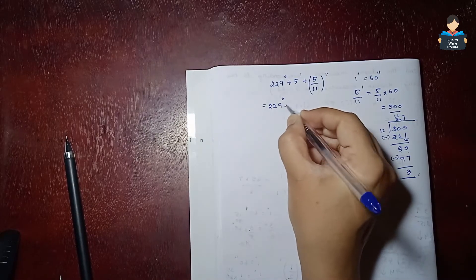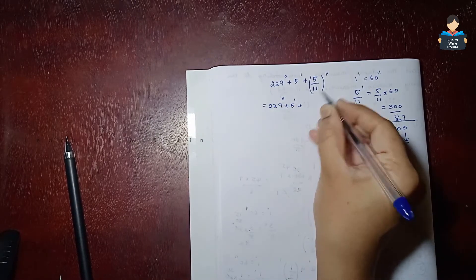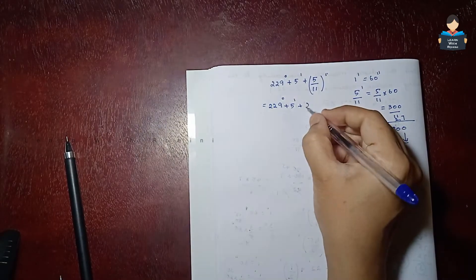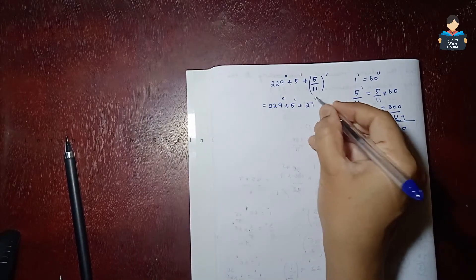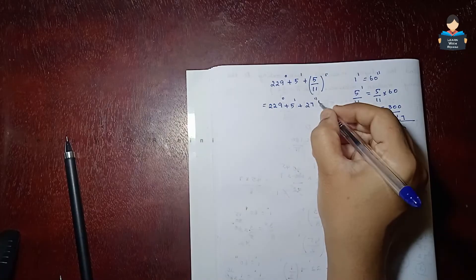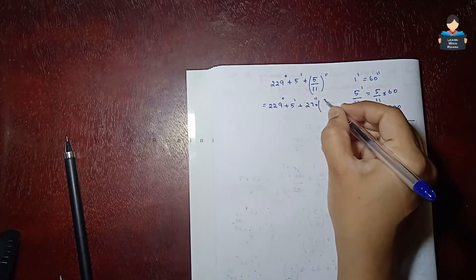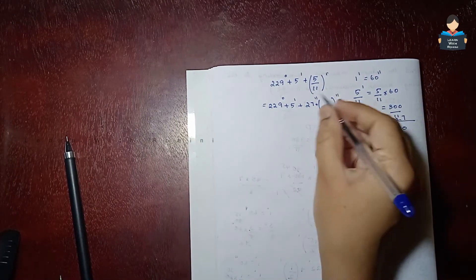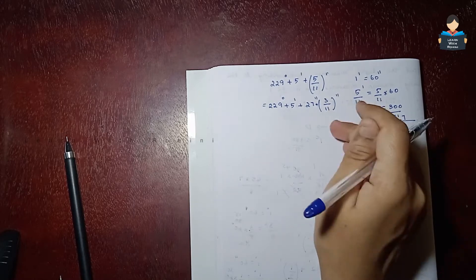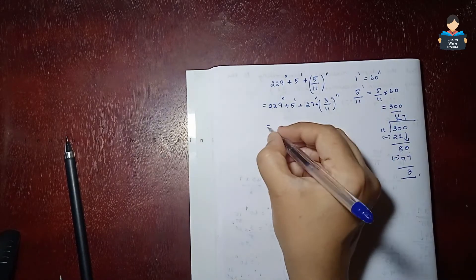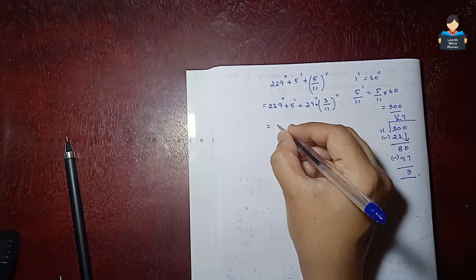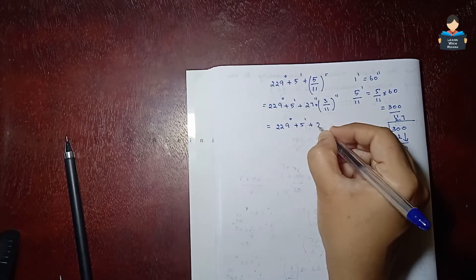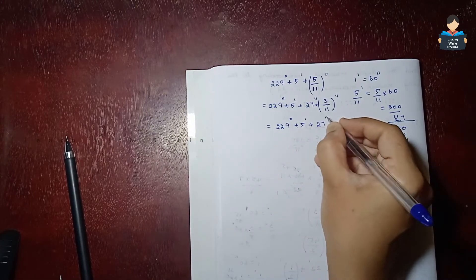Dividing 300 by 11 gives 27 seconds and remainder 3. So the full answer is 229 degrees plus 5 minutes plus 27 seconds.